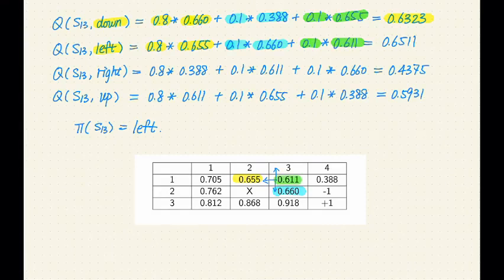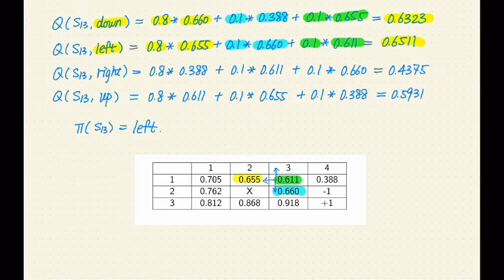So in total, our expected utility is 0.6511. You can use a similar approach to plug in the formula for right and up and determine their expected utilities.